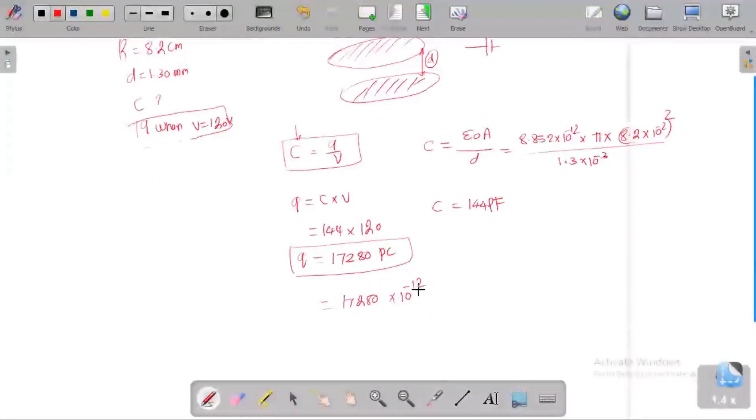Because of unit conversion, 17,280 will be 1.728 into 10 to the power minus 8. This is converted into coulomb. This is the charge in the plate.